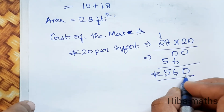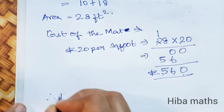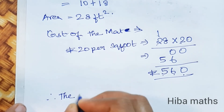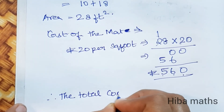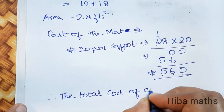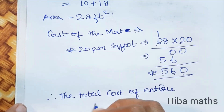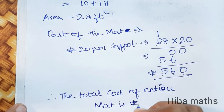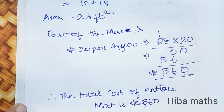So the answer is 560 rupees. Therefore, the total cost of the entire mat is rupees 560. I hope that was easy to understand — thank you so much for watching!